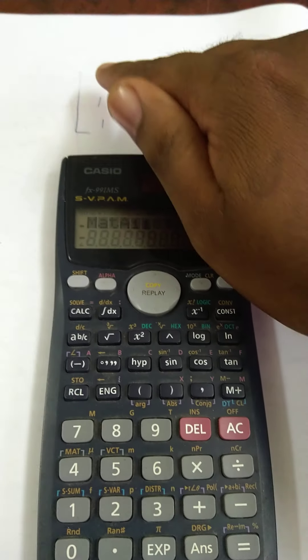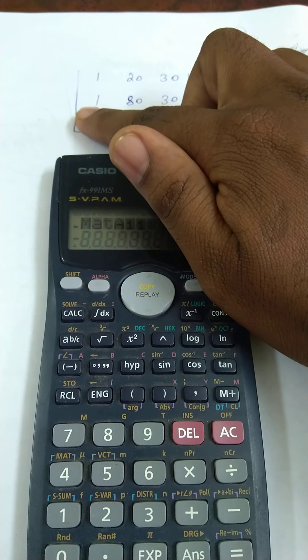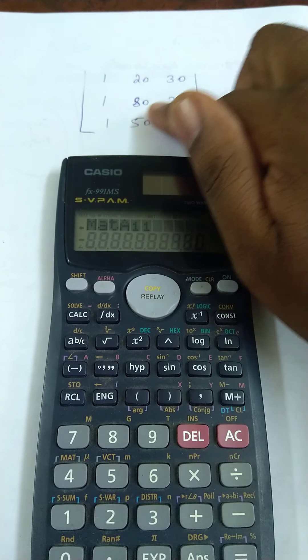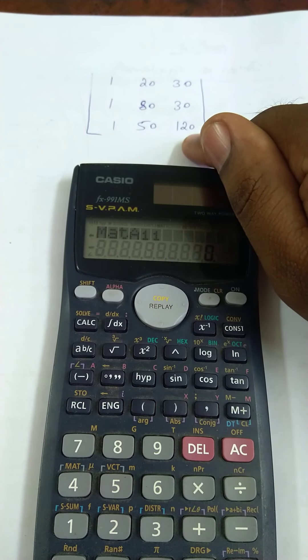Now for the matrix positions: this is A11, A12, A13, then A21, A22, A23, then A31, A32, A33.